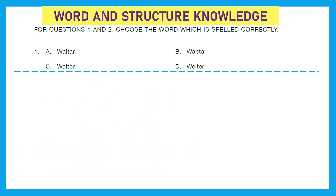The first section is word and structure knowledge. For questions 1 and 2, choose the word which is spelled correctly. Question 1 looks like they're talking about 'waiter,' which means a man whose job is to serve customers at their tables in a restaurant, cafe, etc. The right spelling is option C: W-A-I-T-E-R, waiter.